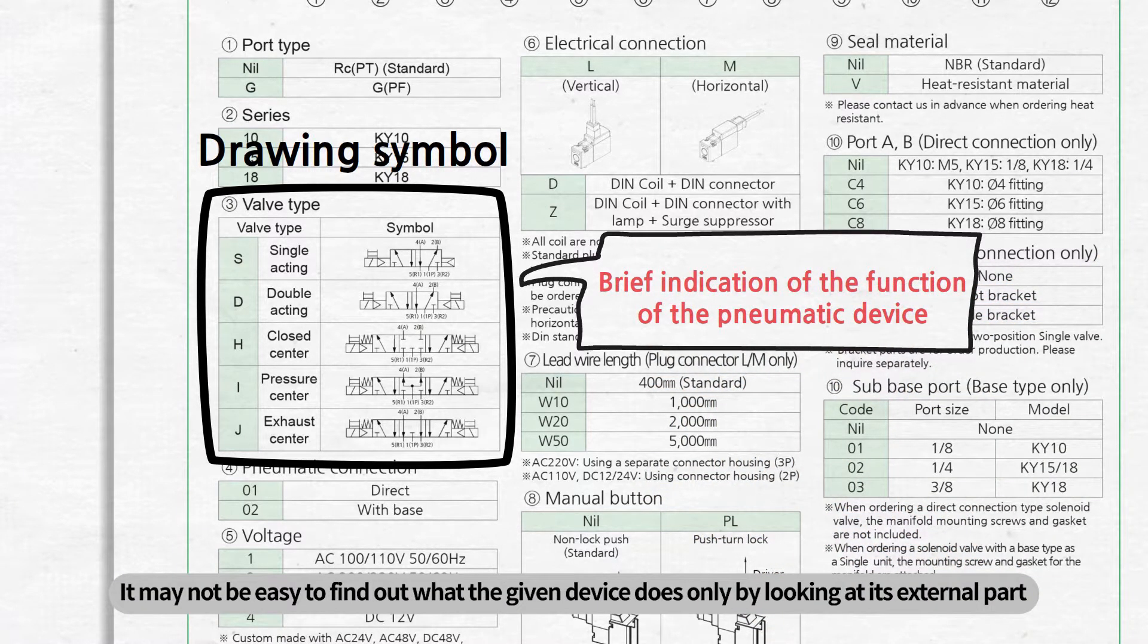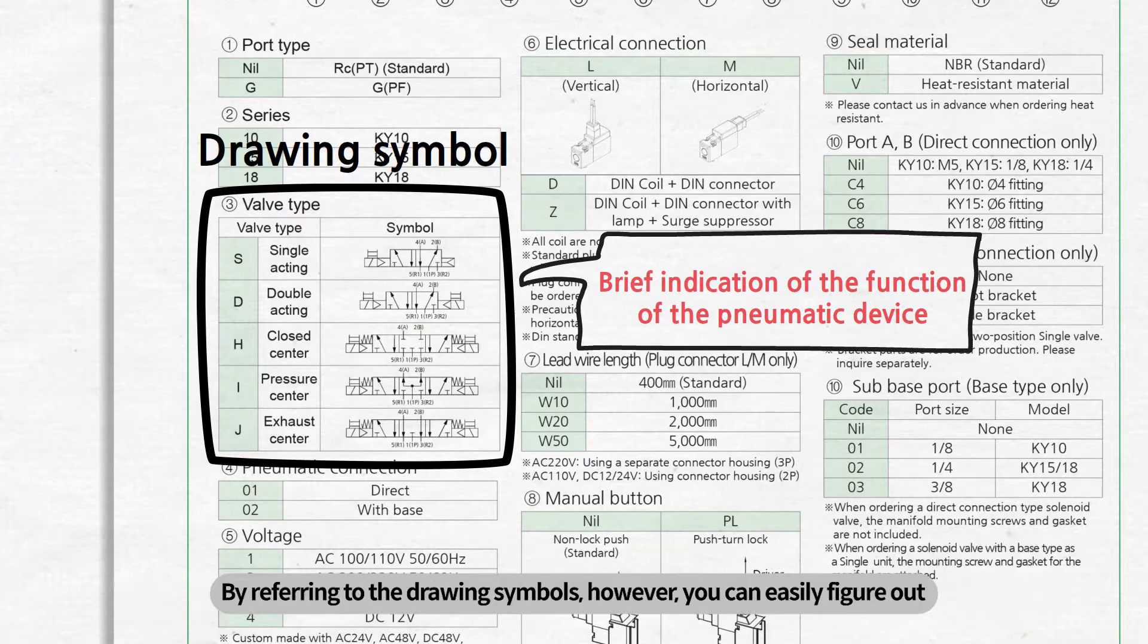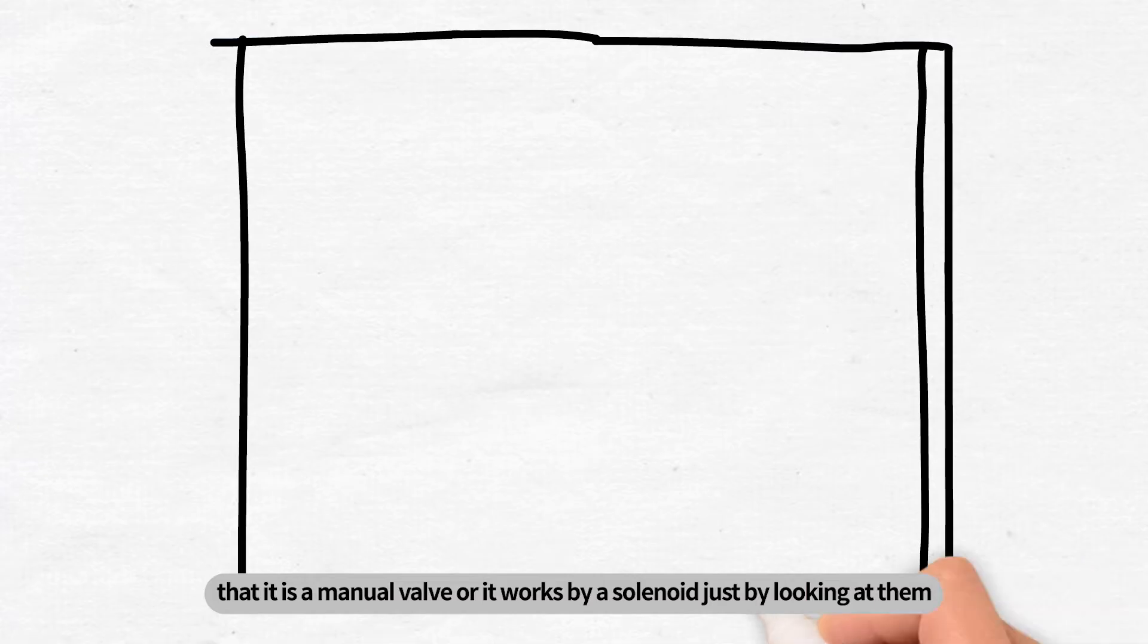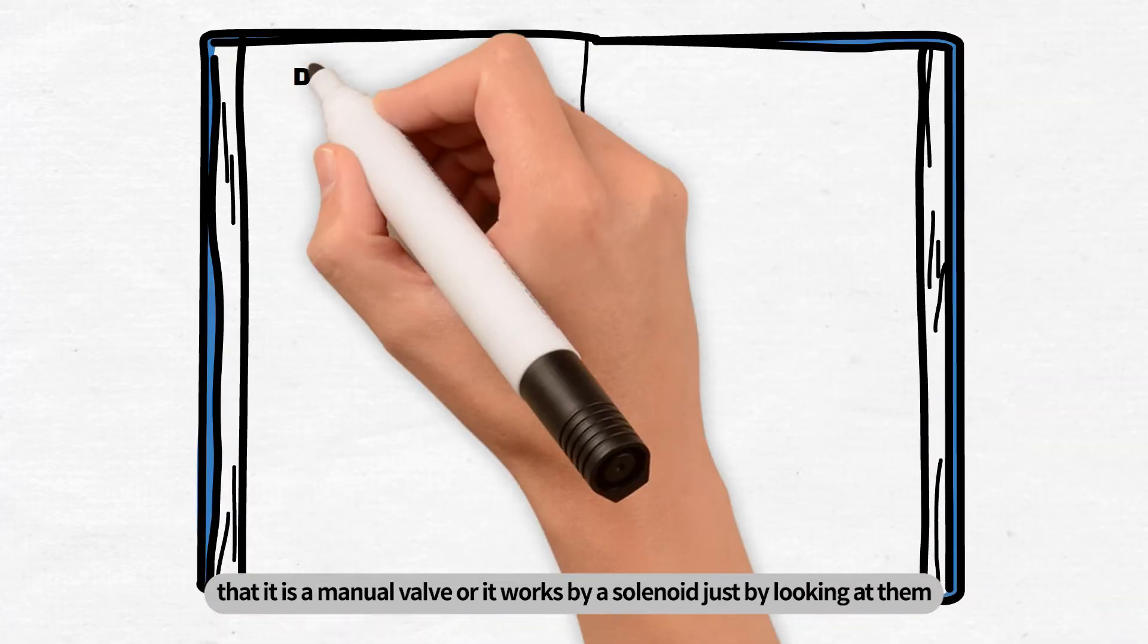It may not be easy to find out what the given device does only by looking at its external part. By referring to the drawing symbols, however, you can easily figure out that it is a manual valve or it works by a solenoid just by looking at them.